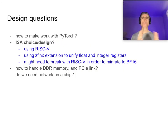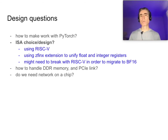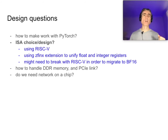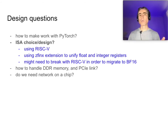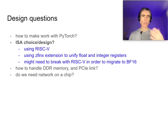ISA choice and design. Using RISC-V — this is very popular recently, many projects are using it, and it's nice to use. I'm using the Zfinx extension so that we unify the float and integer register file. We might need to break with RISC-V in order to migrate to BrainFloat 16. There might be an extension already for BF16 — if there is, I want to know about that. Otherwise I might have to create my own extension, which would mean modifying LLVM and related tools.